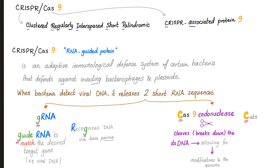Now let's talk about CRISPR-Cas9. What does CRISPR mean? Clustered, regularly interspaced, short, palindromic. And Cas is the CRISPR-associated protein. So CRISPR and CRISPR-associated — Cas. CRISPR is clustered, regularly interspaced, short, palindromic.